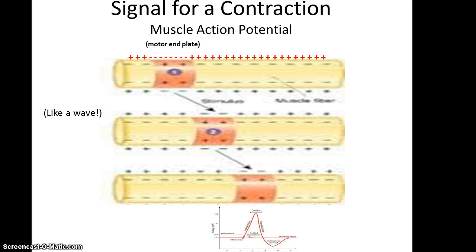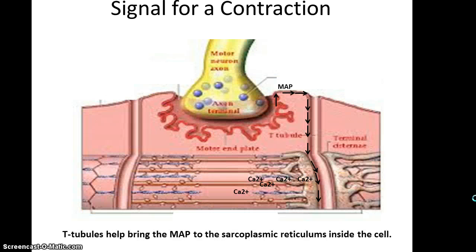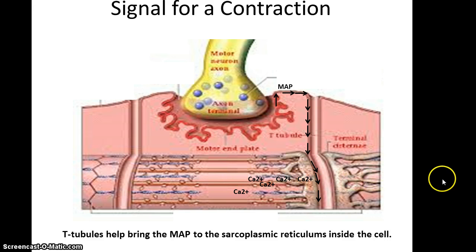I like to think of the muscle action potential as sort of like the wave in a stadium — the wave starts at the motor end plate when sodium floods into the cell, switching the charge so that you have a negative charge on the outside and a positive charge on the inside, and that flows down the length of the cell. You can see how the muscle action potential goes from the motor end plate, along the surface of the sarcolemma, and into the transverse tubules. When it reaches where the transverse tubule abuts the sarcoplasmic reticulum, the sarcoplasmic reticulum releases its calcium ions, eventually triggering a contraction. That's it for this part of our lecture on muscles.